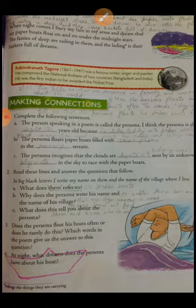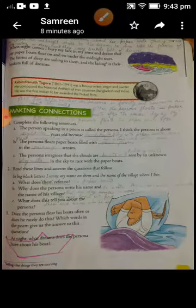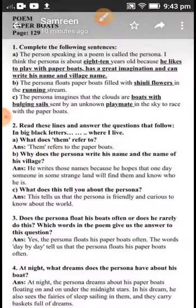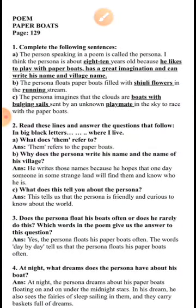Students, you all have to complete your word meanings, write down the poem in your notebook, write down word meanings, and then start writing the work in your book on page number 129. Start from 'Making Connections' — there is very little space so write in your fair notebook. Complete the following sentences.